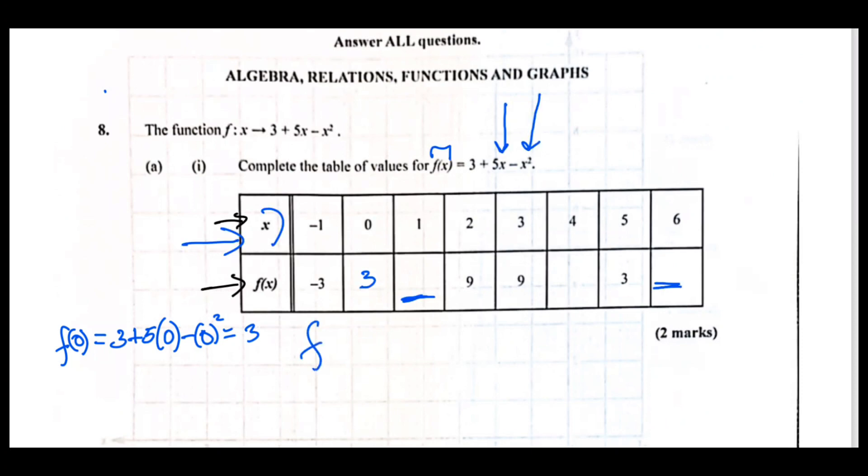The next one is f(1). You're going to put 1 where the x is, so I'm substituting 1 where x is. You're looking at 3 + 5 - 1. I think this is 7, yes sir, so this value here is 7.